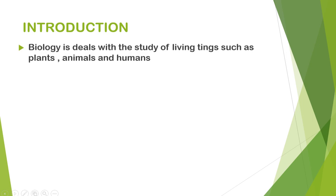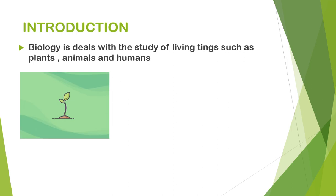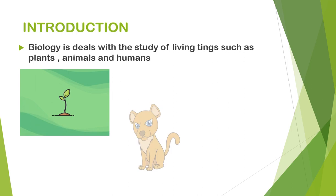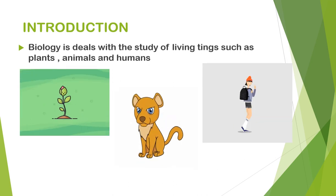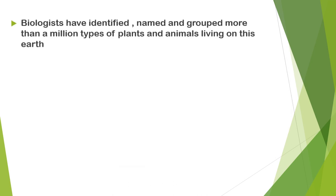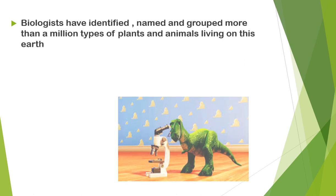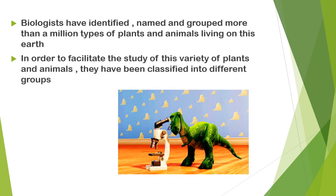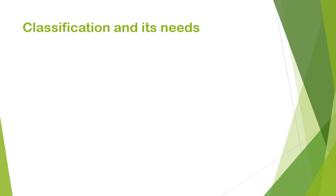Biology deals with the study of living things such as plants, animals and humans. Biologists have defined, named and grouped more than a million types of plants and animals living on this earth. In order to aid the study of this variety of plants and animals, they have been classified into different groups.